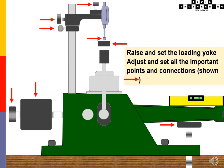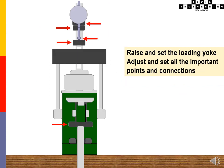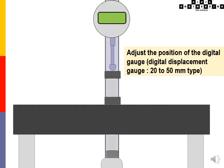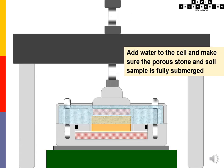Raise and set the loading yoke. Adjust and set all the important points and connections. Adjust the position of the digital gauge. Add water to the cell.